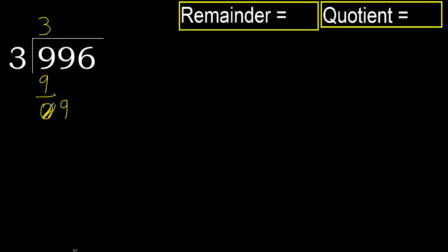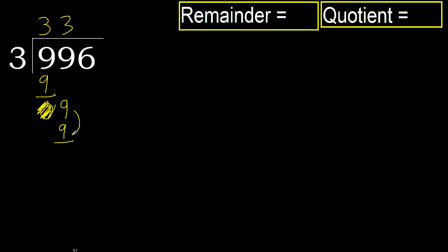Eliminate. Bring down 0, then 9. 3 multiplied by 3 is 9, which is not greater. Subtract. 3 multiplied by 3 is 9 — 9 is greater. Multiply by 2.